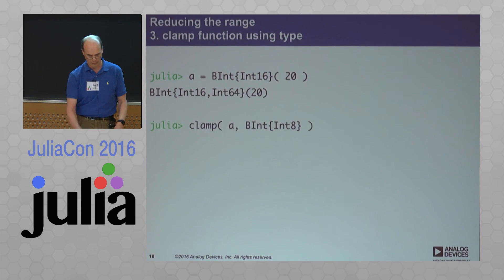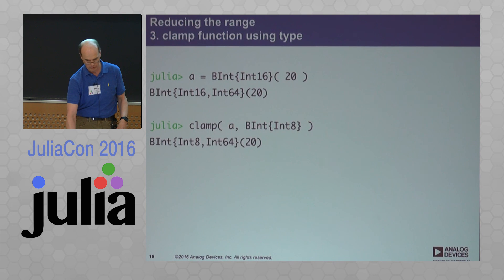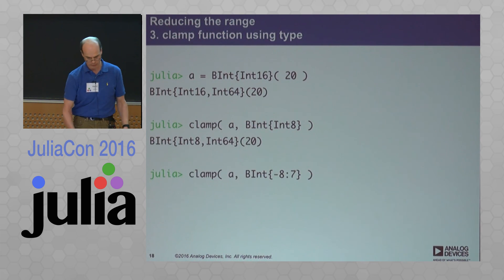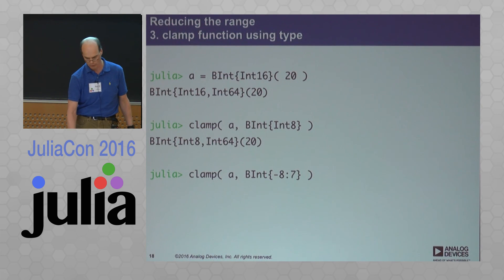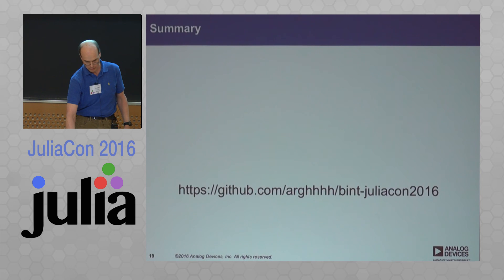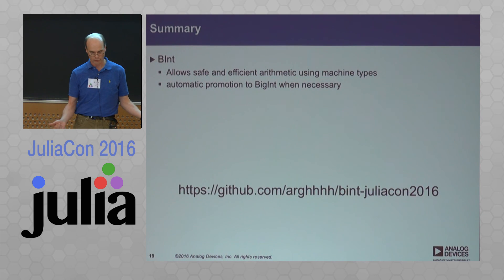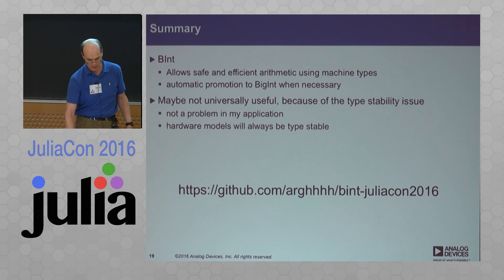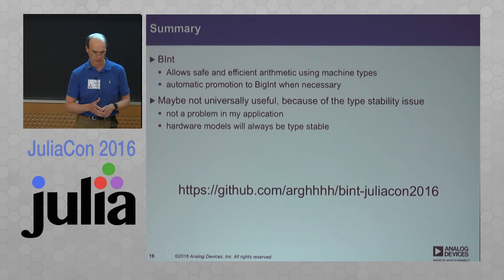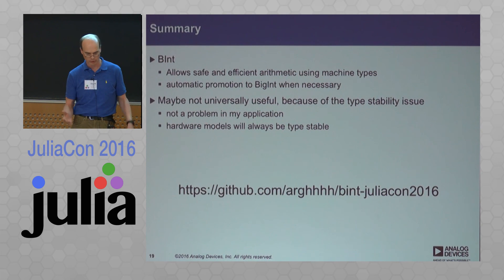Here's a quick example: taking a 16-bit number and clamping it to an 8-bit number, or clamping the same 16-bit number to a signed 4-bit range. In this case it has actually clamped — it's taken 20 and clamped it to 7. In summary, this allows safe and efficient arithmetic using machine types when possible, promoting to BigInt when necessary. It might not be universally useful because of the type stability issue, but that's not a problem in my application, and if you take care it doesn't necessarily need to be a problem in any other application. The code is out there.